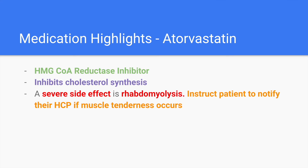Medication highlights: Atorvastatin is an HMG-CoA reductase inhibitor that inhibits cholesterol synthesis. One severe side effect is rhabdomyolysis — the breakdown of skeletal muscle — where the muscle releases toxins to the body that can be damaging to our organs, especially our kidneys. Always instruct patients to notify their healthcare provider if they experience muscle tenderness.